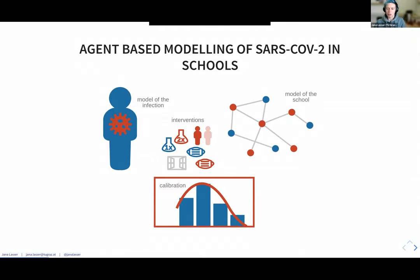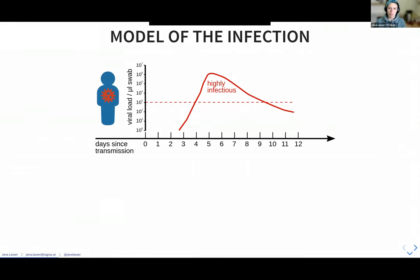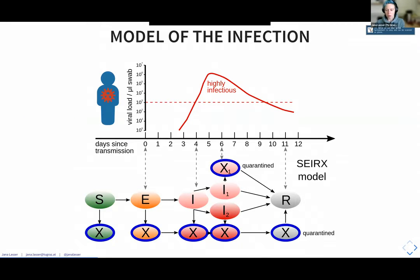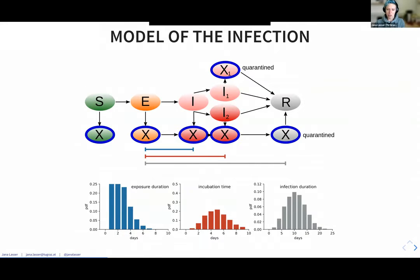Let me briefly go over the other components so you can understand how it all works together. The model of the infection in the individual is closely tied to an approximation of the viral load. We start with a susceptible individual; at day zero, at transmission, the individual becomes exposed. As the viral load increases, the individual becomes infectious and then either stays asymptomatic or becomes symptomatic, and then after a few days recovers and ceases to be infectious. Since we want to incorporate quarantine, we also have each of these states in a quarantined version where the agent simply has no contacts to other agents. The transition periods between these states are drawn from distributions for epidemiological parameters, which we know from literature for the various virus variants we are dealing with.